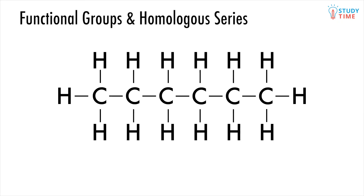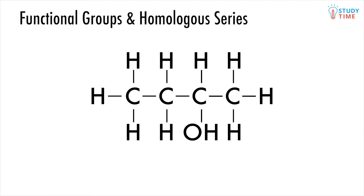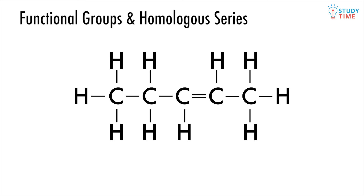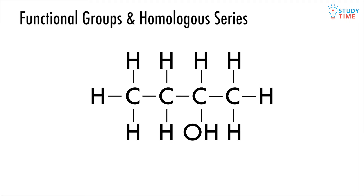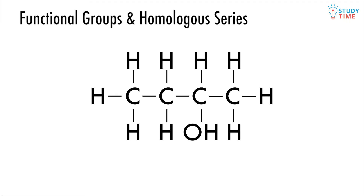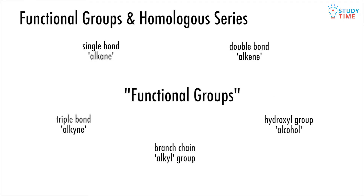Throughout your journey, you may have noticed that not all organic compounds are simply made up of carbons and hydrogens. In fact, hydrogens contribute very little to the properties of a compound. Instead, it is all the unique variations of the limbs on our carbon backbones which give organic compounds their true character. So what happens when we see an OH instead of just an H, or two bonds connecting our carbons instead of one? All of these anomalies are called functional groups and are what define our compounds.